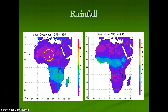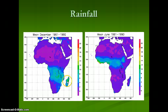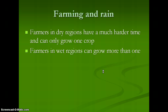In terms of rainfall, the rain patterns generally go from one direction in the summertime and the other way around in winter. You see this particularly in places like Madagascar, which gets a lot of rain in the winter — this is an example of the monsoon pattern. Farmers in dry regions have a much harder time because they can only grow one crop, while farmers in wet regions can grow more than one, though the types of crops they can grow are also affected.